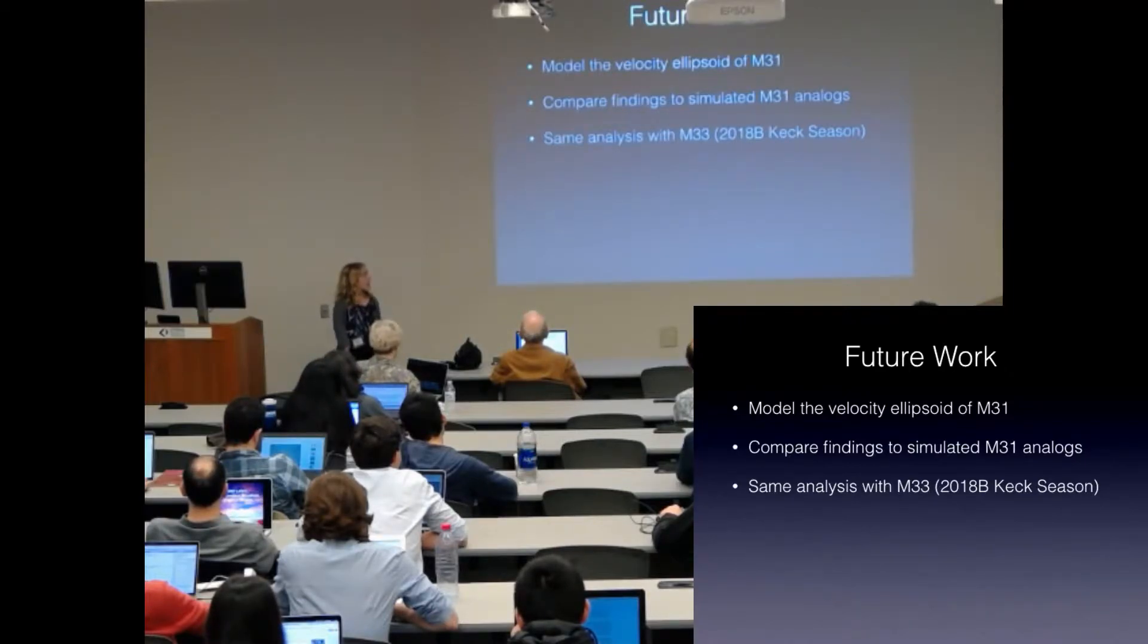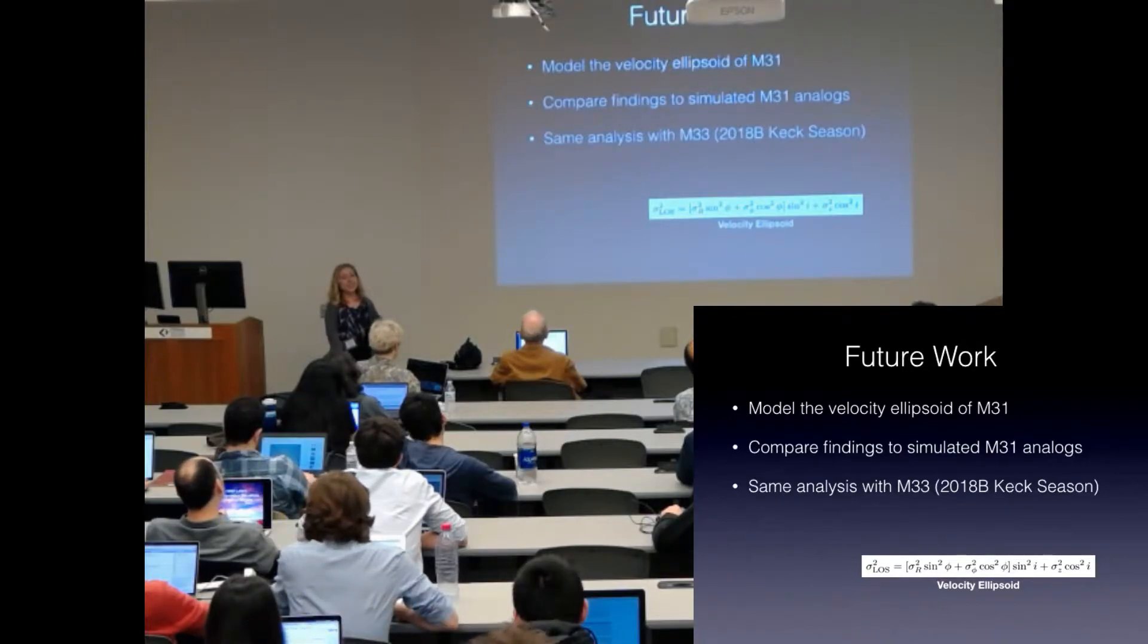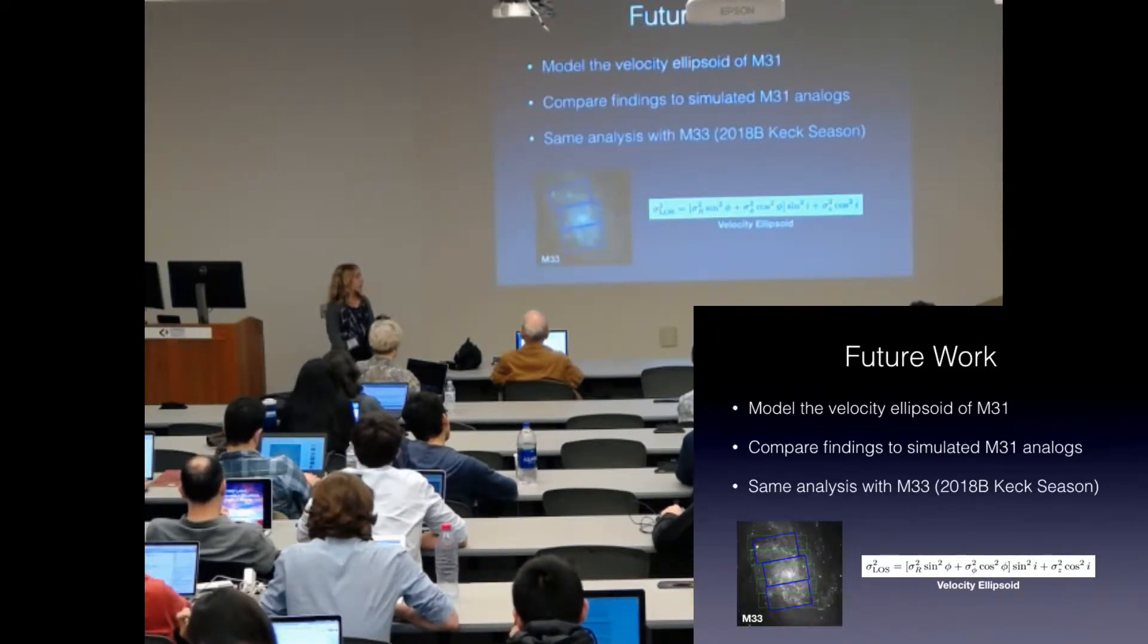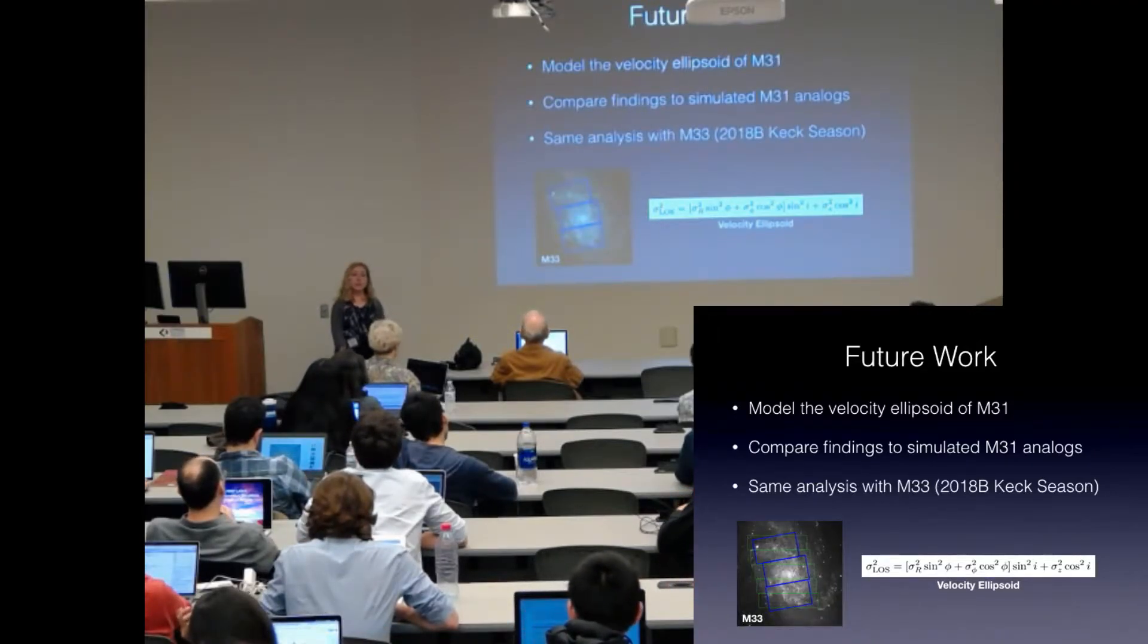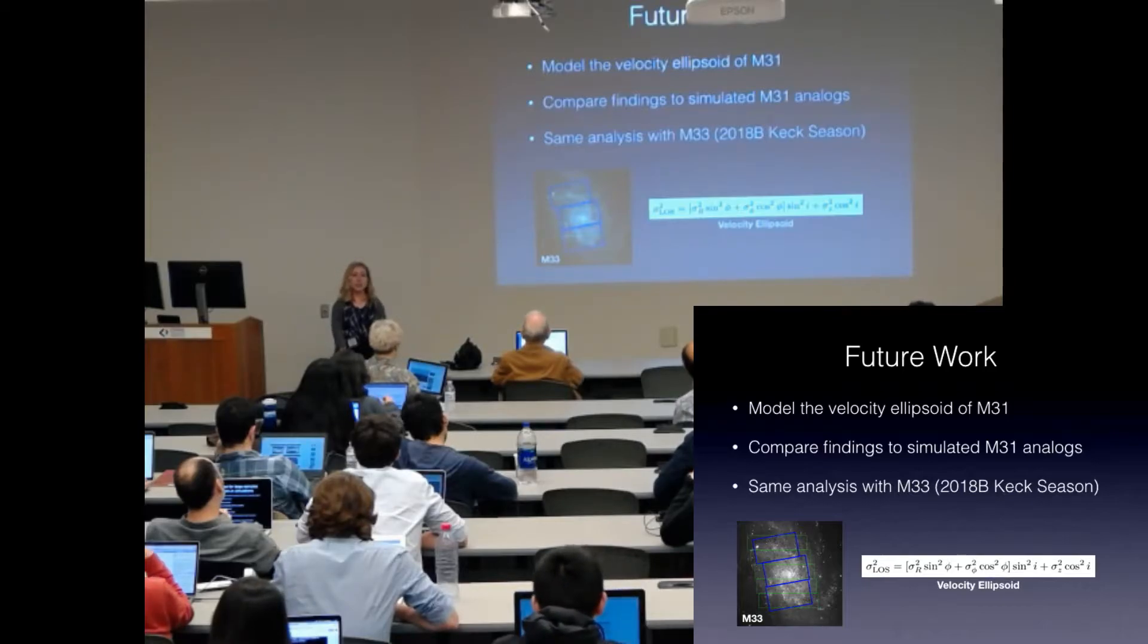This coming fall, the velocity ellipsoid can also be described by this equation. This coming fall, we will be taking spectroscopy with DEIMOS on M33. So I'll be able to reproduce this analysis with another galaxy. This will be interesting, especially then to study the shape of the velocity ellipsoid, because M33 is much less inclined. So we'll be better able to constrain the vertical component.